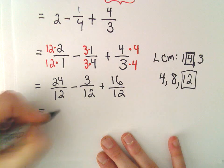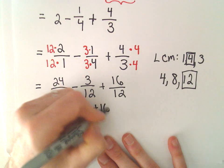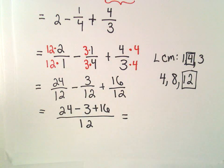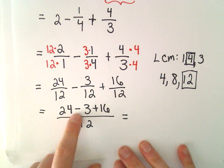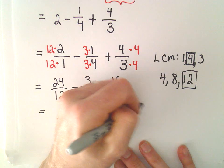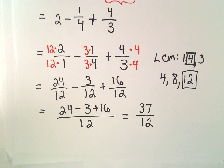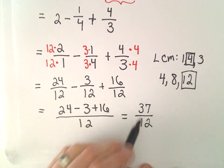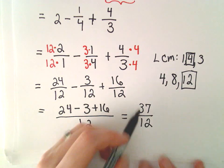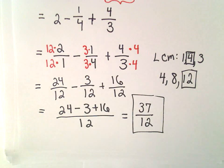Now the arithmetic simply happens in the numerator. We do 24 minus 3 plus 16, all over 12. 24 minus 3 is 21, plus 16 is 37, so we get 37 over 12. And 37 is a prime number, so this fraction won't reduce. You could make it into a mixed number, but I'll just leave it as 37 over 12.